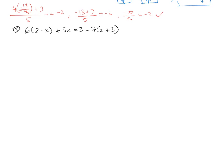Last one, and hopefully the most difficult. Now we have brackets, so we have to do step 1: expand and collect like terms, using our bracket expansion rules. 6 times by 2 plus 6 times by negative x: 6 lots of 2 is 12, 6 times by negative x is negative 6x, and then I've got plus 5x, equal to 3. Negative 7 times by x is negative 7x, and negative 7 times by 3 is negative 21. Collecting like terms: negative 6x plus 5x is negative 1x, so we've got 12 take 1x on the left-hand side. And 3 take 21 is negative 18, with negative 7x on the right.